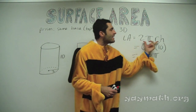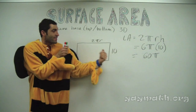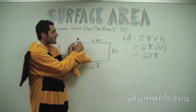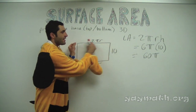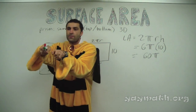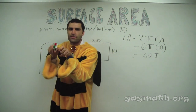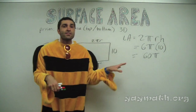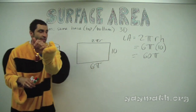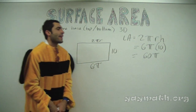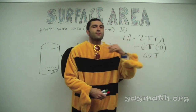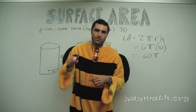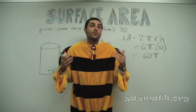The idea is that if you can unravel a shape and see it as a rectangle, and you remember base times height, then you know the base is the circumference of the circle. Clearly I could have turned on the camera and said 'here's the formula for lateral area of a cylinder.'